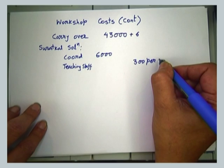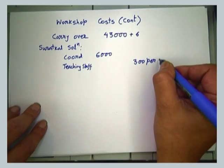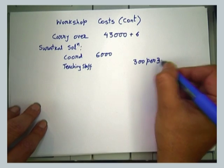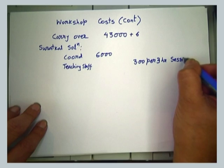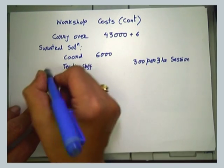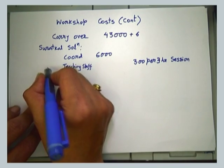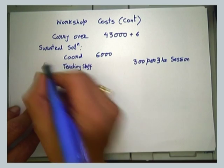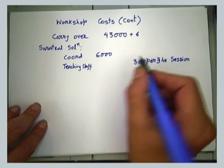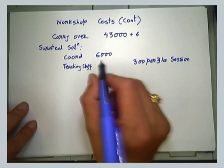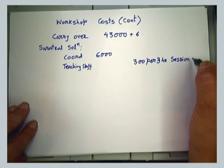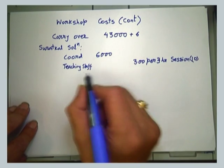Is that per session you mean? No, per day, because it is a three-hour session. And how many teachers? I have taken 10 — actually 10 sessions. The number of teachers can be decided; it is up to them. I have taken 10. So this comes to 3,000?